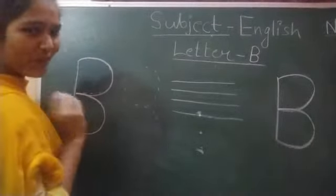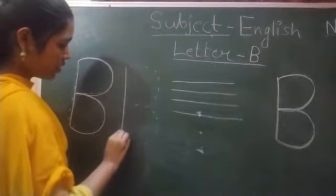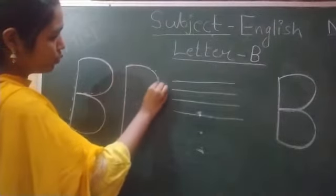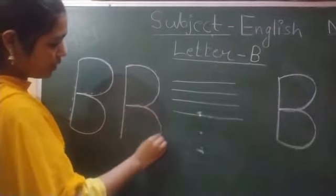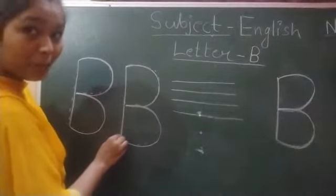B for boy. Again, make a standing line, one. And curve, two. Second curve, three. In three strokes we trace letter B.